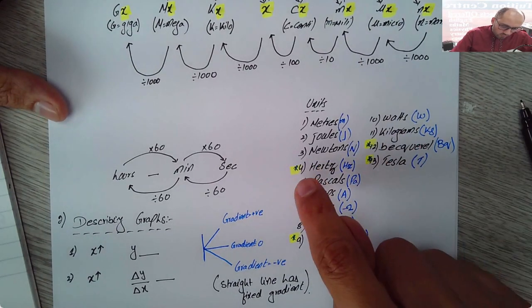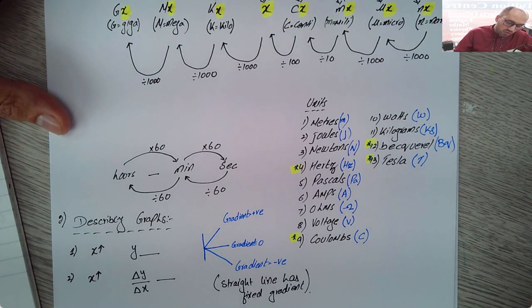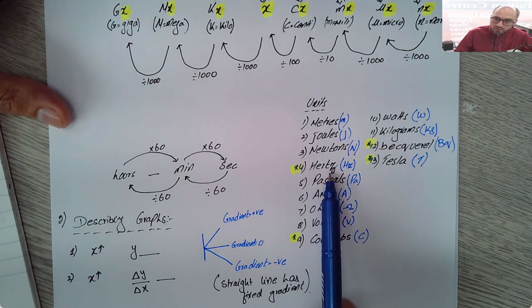I've highlighted four of them: one, two, three and four. They may ask you about these in specific. Why are these four? So you need to remember hertz is for the frequency, coulombs is for charge,